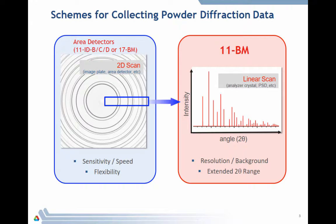On these point detectors we'll have here, you have better resolution, better background. Very often you'll have extended 2θ range, but your data collection times are very much longer. Even at the quickest we can measure at 11-BM, we're talking about the order of minutes, and a standard scan, an hour or more if you want something really unique.